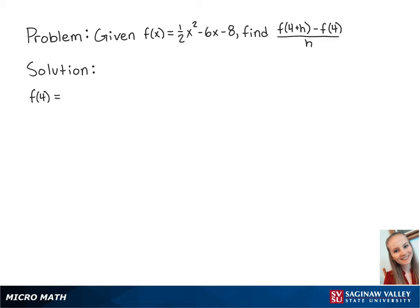For this problem, we have the function f of x equals 1 half x squared minus 6x minus 8, and we're going to find the difference quotient f of 4 plus h minus f of 4 over h.